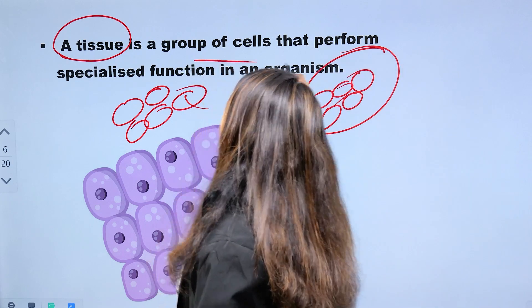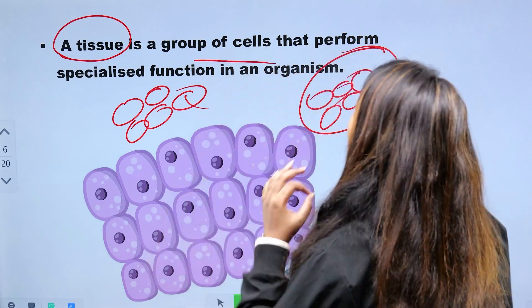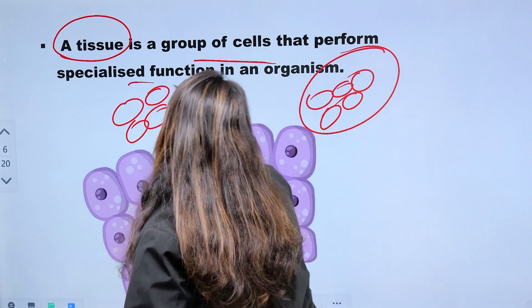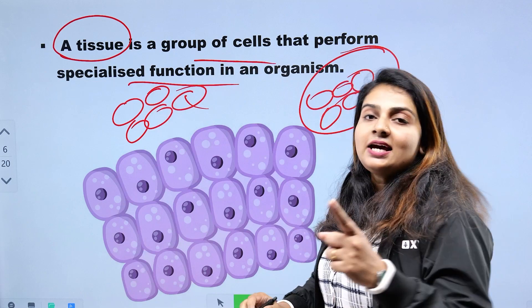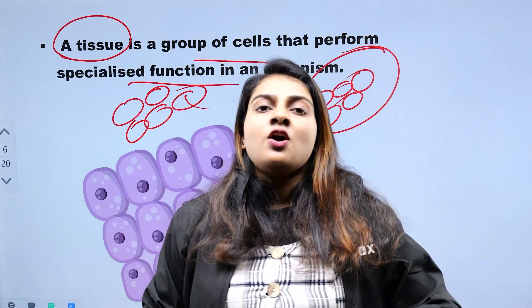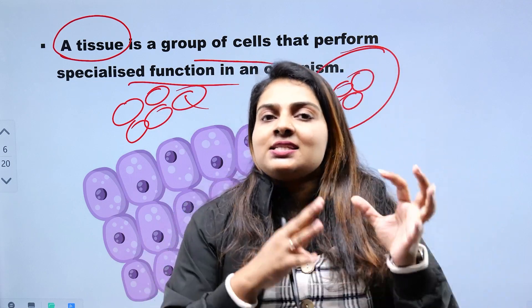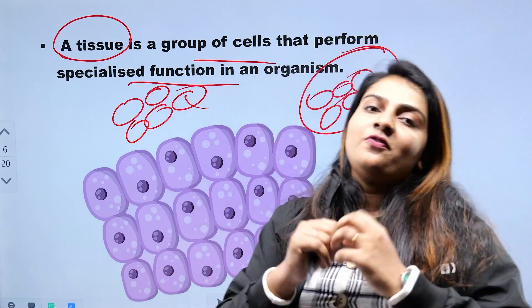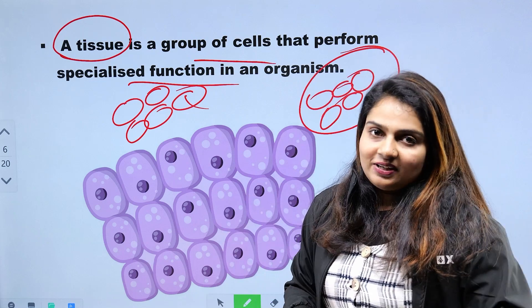Tissues are a group of cells that perform specialized functions in an organism. In an organism, there are a group of cells that perform specialized functions. Then we call them tissues.